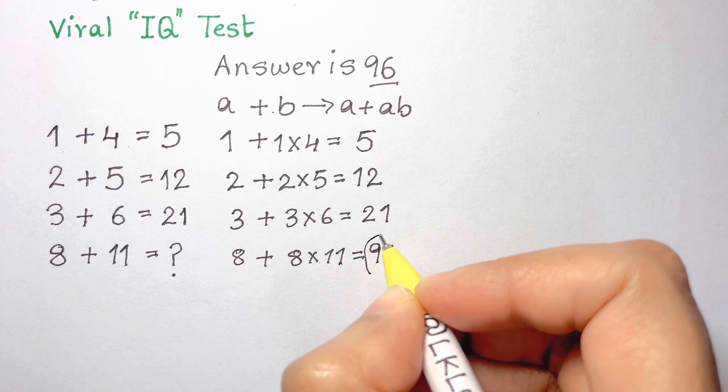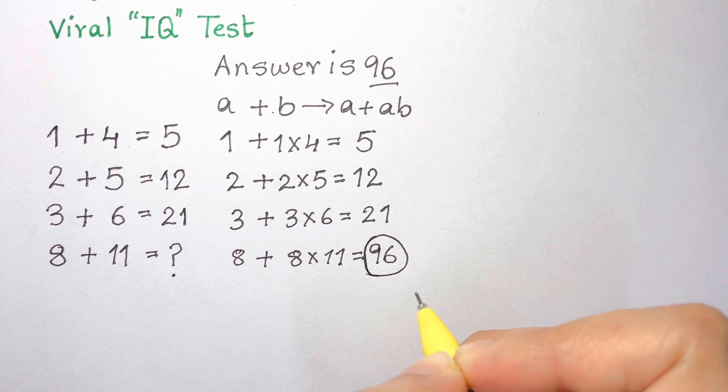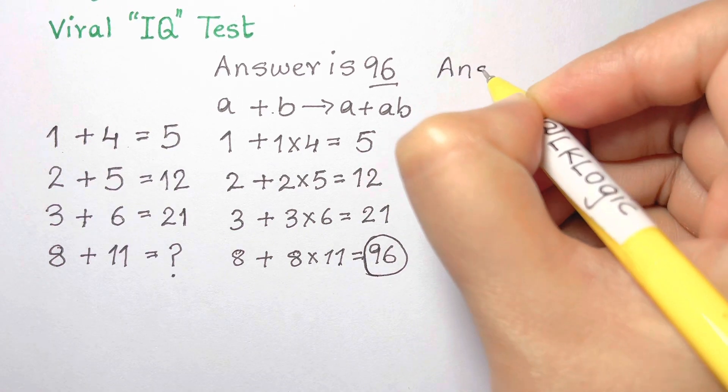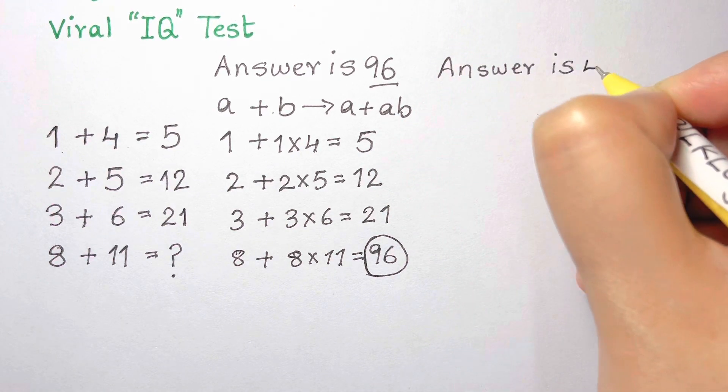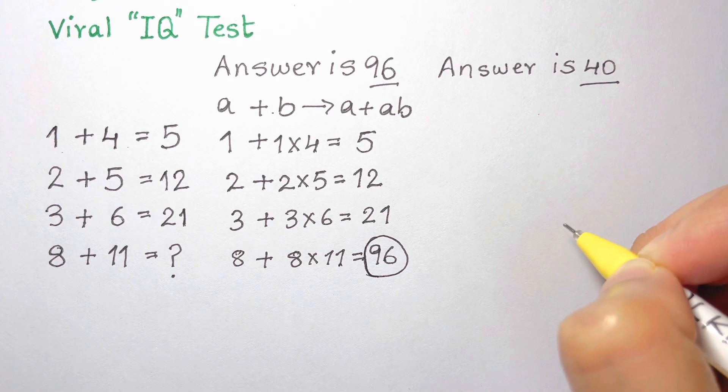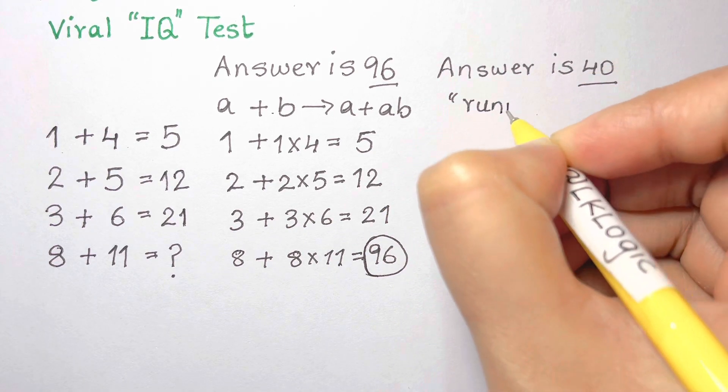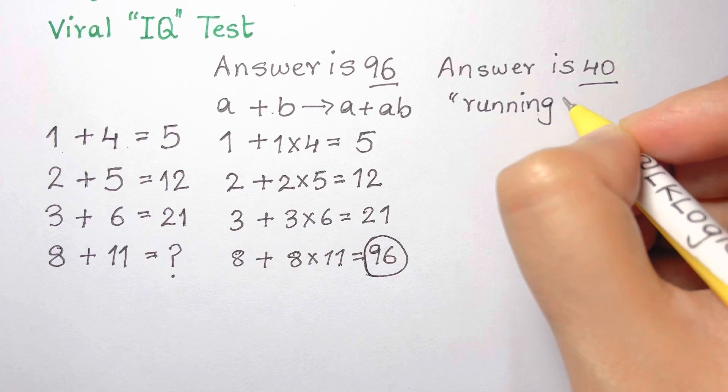There were people however who disagreed with this interpretation. They believed the answer should have been a different number, which is 40. How did they arrive at this answer? They thought the puzzle should be interpreted as a running total where you add up the numbers from each line.